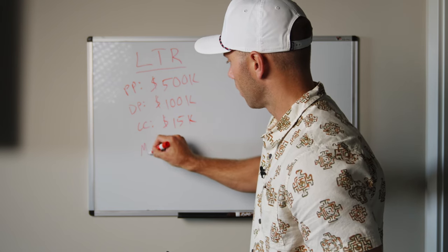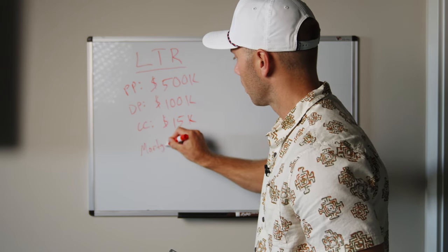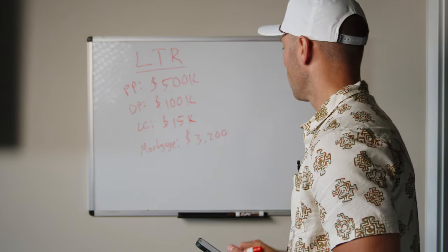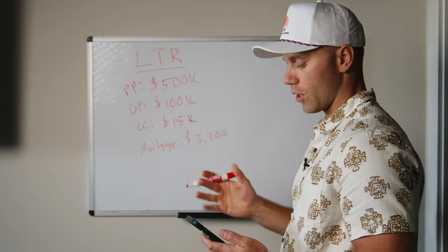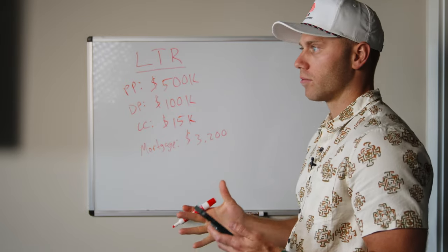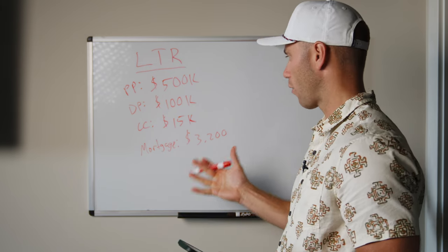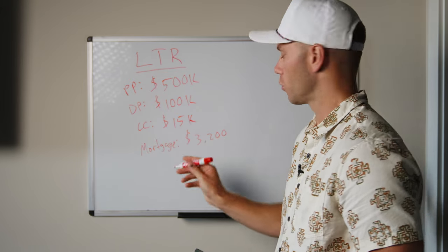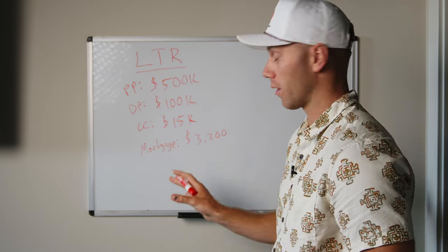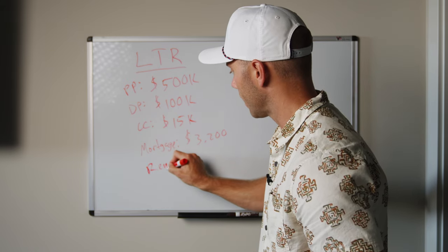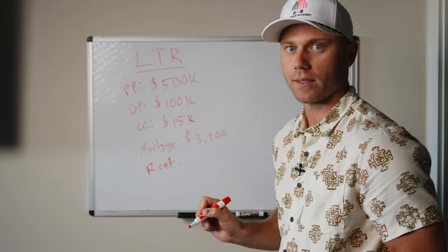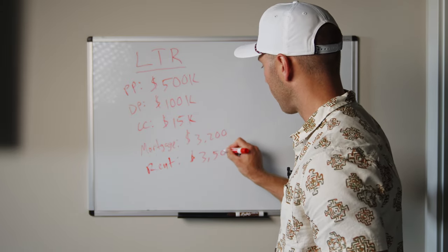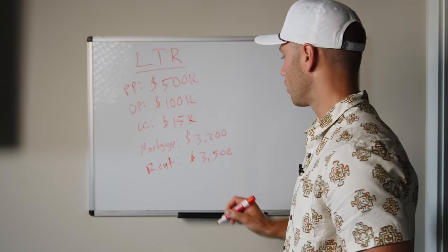So mortgage is $3,200 a month. For this type of property, you're probably going to be renting out the whole house for, let's say, $3,500 a month. So you're aiming for a cash flow of about $300 a month. If you rent it out to a tenant for 12 months at $3,500 monthly rent, you're left with $300 a month.